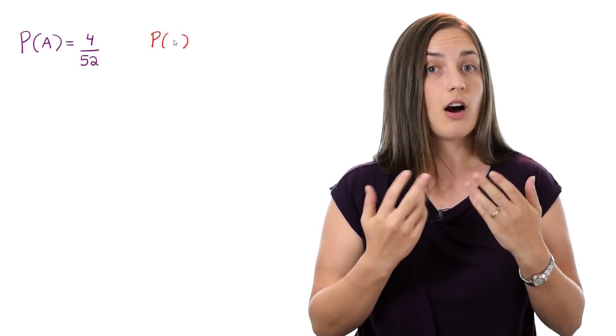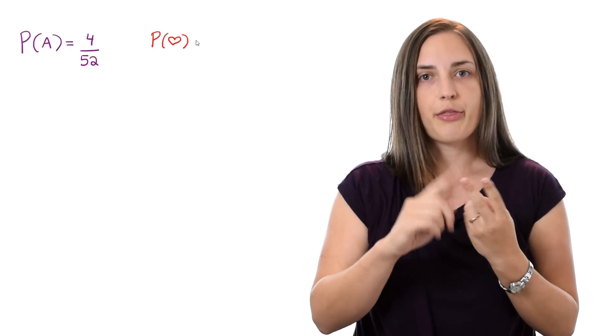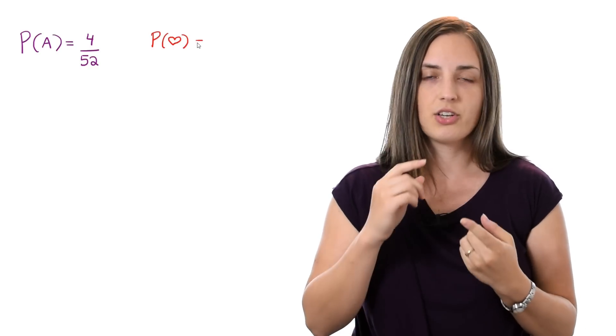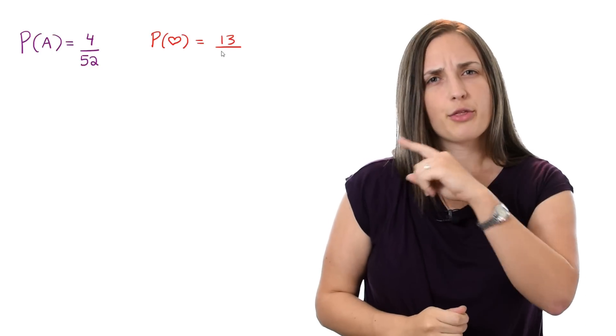If I then ask what is the probability that the card I end up with was a Heart, now I have to think about all the different options and there's a 2, a 3, all the way up to 10 and there's also Jack and Queen and King and Ace. So that gives me 13 out of 52.